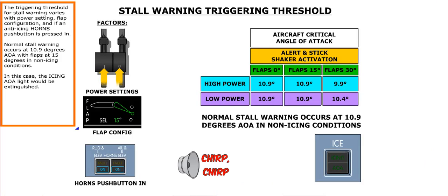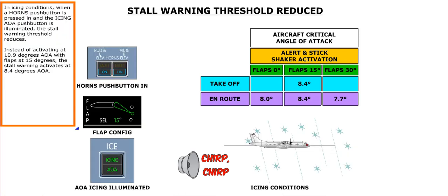The triggering threshold for stall warning varies with power setting, flap configuration, and if an anti-icing horn's push button is pressed in. Normal stall warning occurs at 10.9 degrees AOA with flaps at 15 degrees in non-icing conditions. In this case, the icing AOA light would be extinguished. In icing conditions, when a horn's push button is pressed in and the icing AOA push button is illuminated, the stall warning threshold reduces. Instead of activating at 10.9 degrees AOA with flaps at 15 degrees, the stall warning activates at 8.4 degrees AOA.